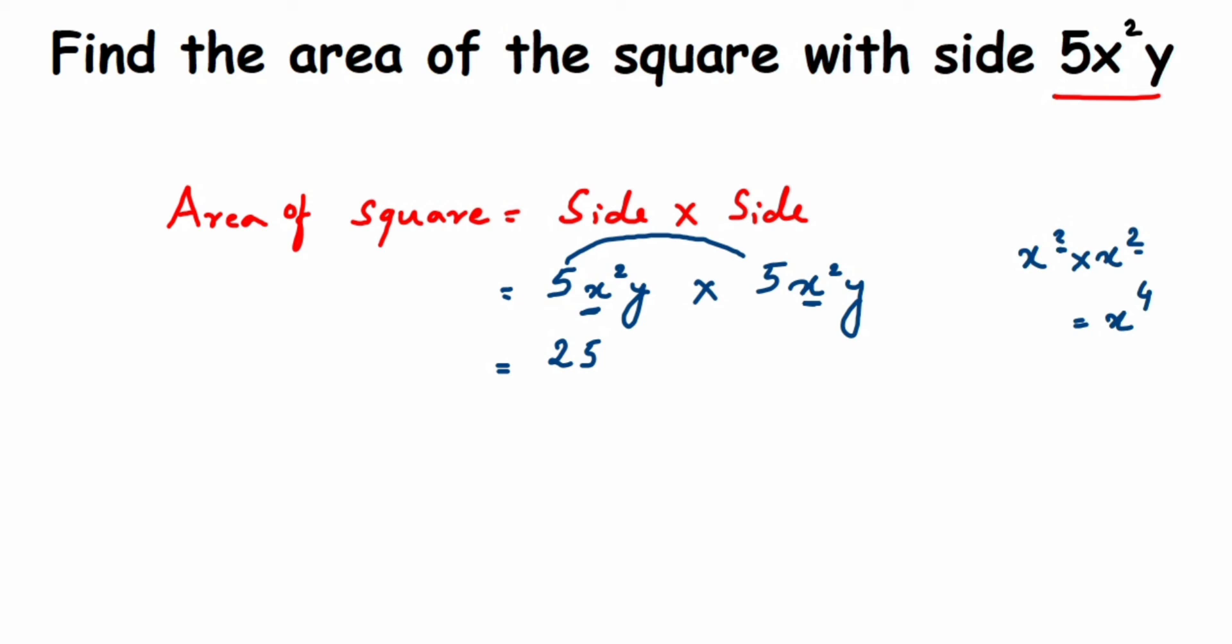So we'll get 25x to the power 4. Again, we have y and y, so y times y will be y². That's it. The answer is 25x⁴y². It was a simple problem.